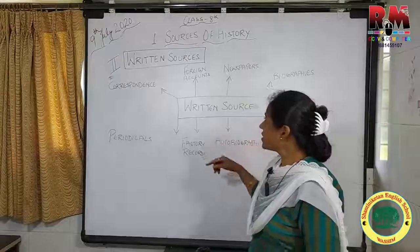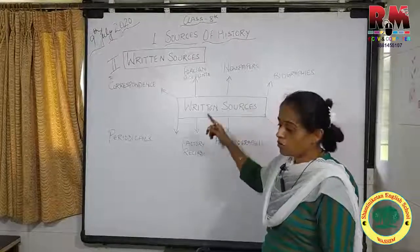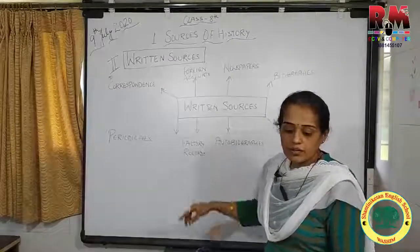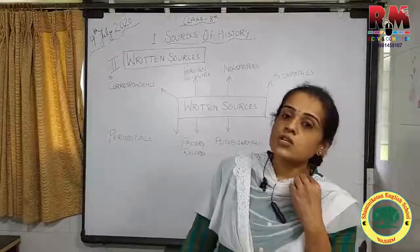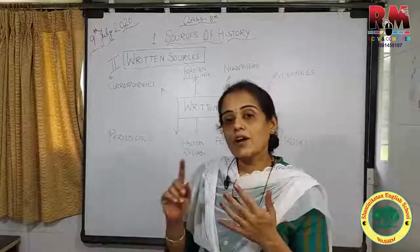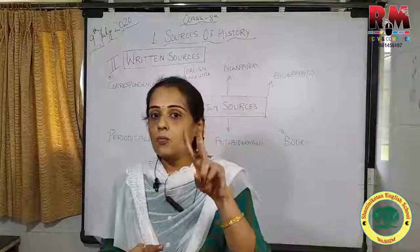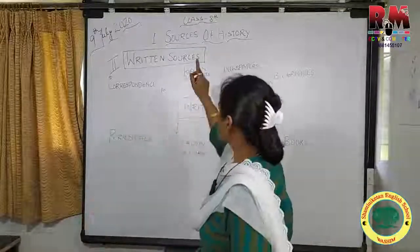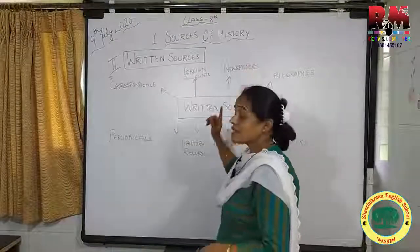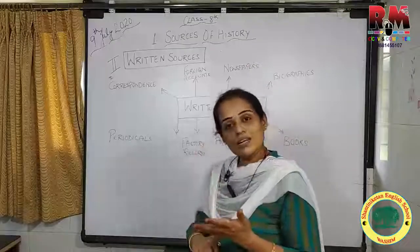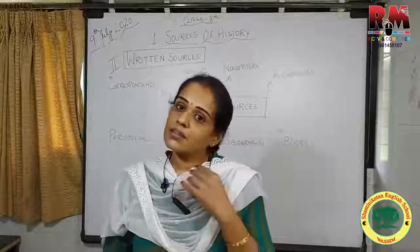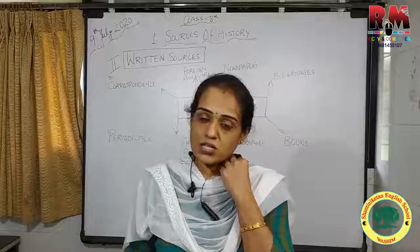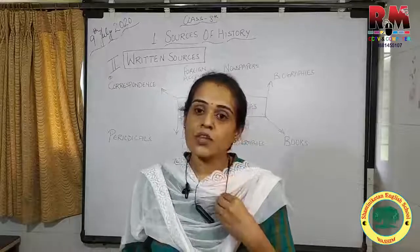So all these things are given in your textbook about the written sources. We have now completed two parts of the sources of history: the material sources and today the written sources.